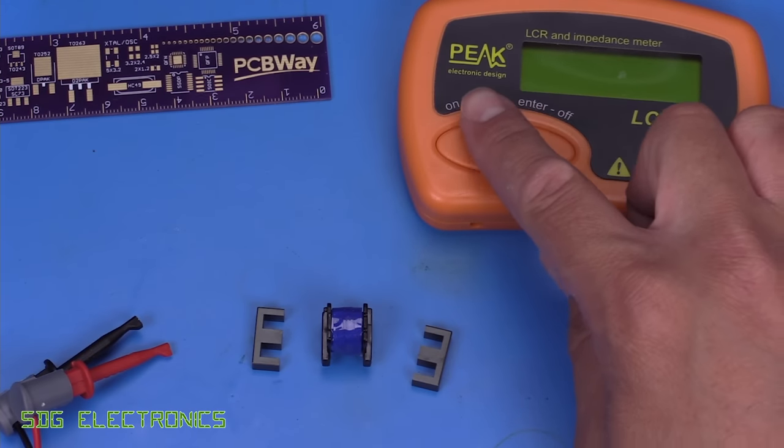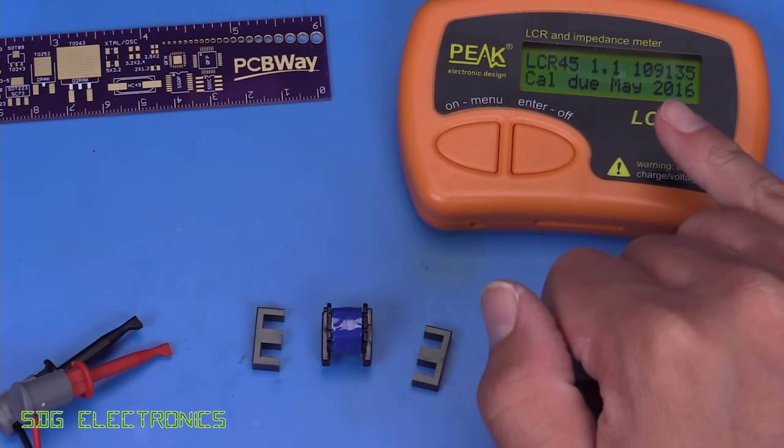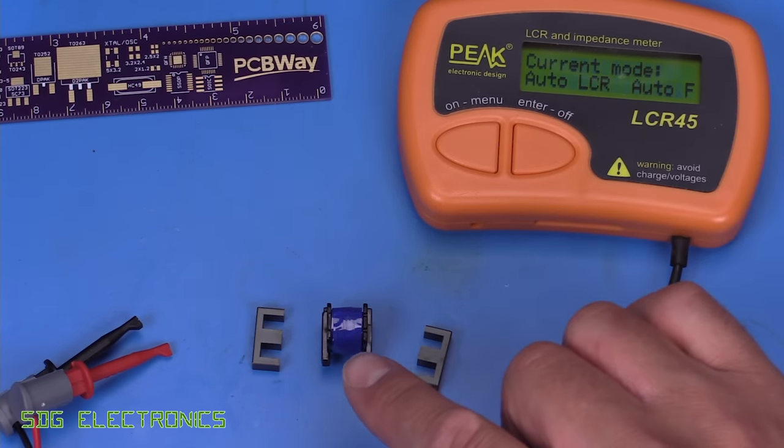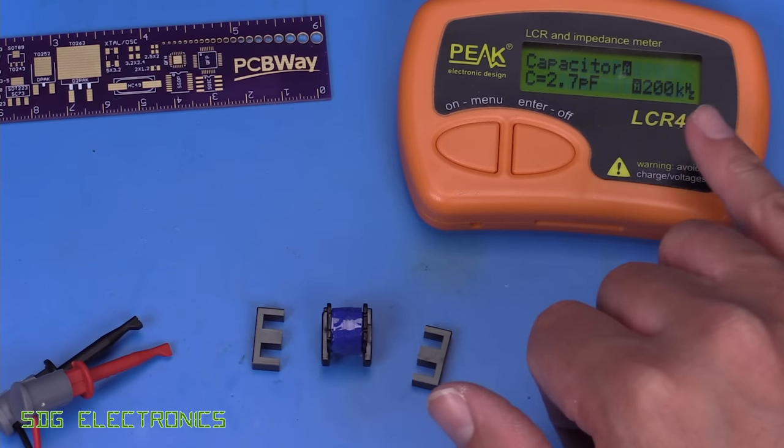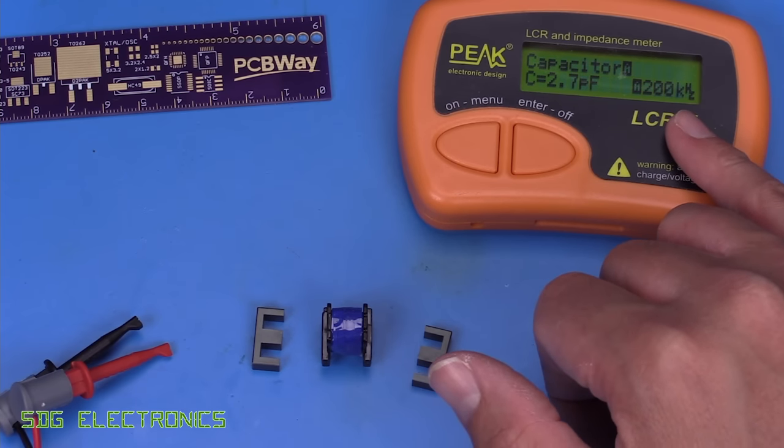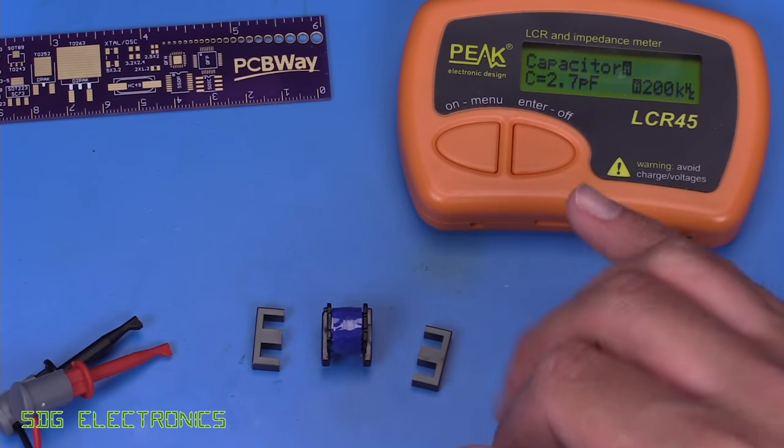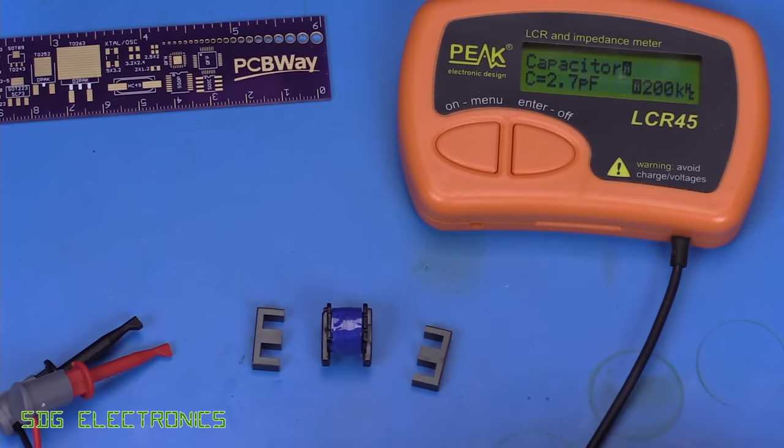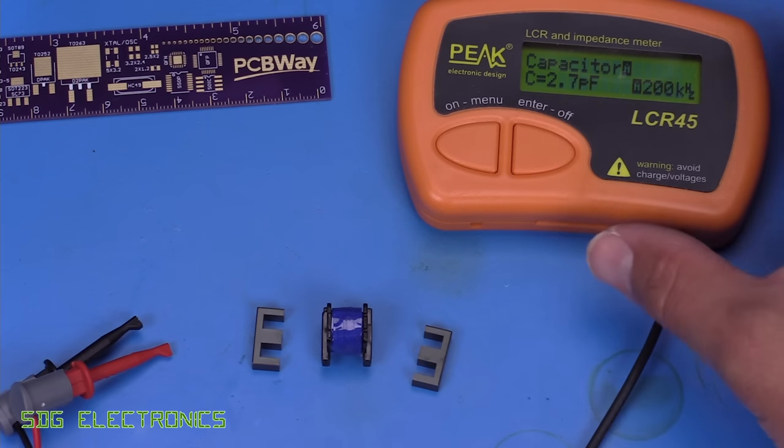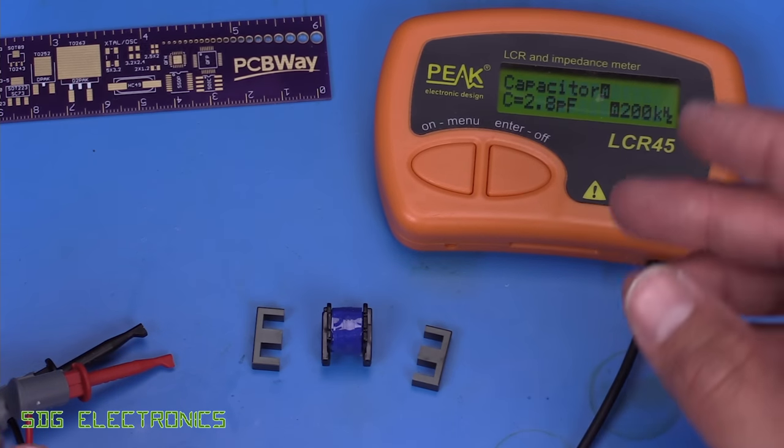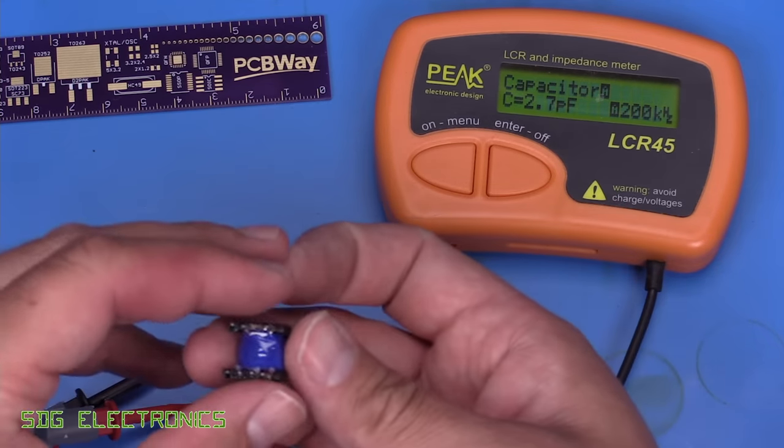So the LCR45 which we've got here from Peak Electronic Design, this one unfortunately can't test at the switching frequency because I think it jumps from 10kHz up to 200kHz and there's no in between. The switching frequency for the Link Switch 562 is about 66kHz. Now I do have an LCR meter on the bench that can do that, but to demonstrate what's actually going on we can still use this.